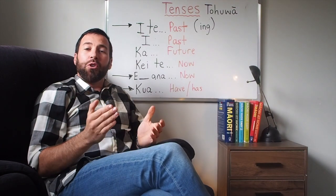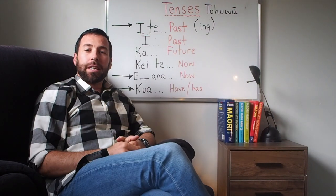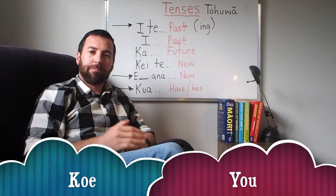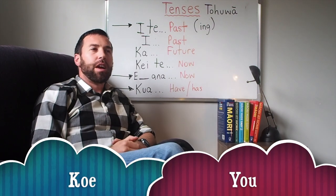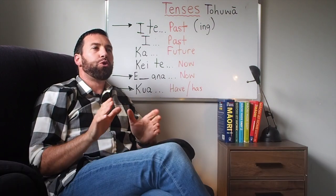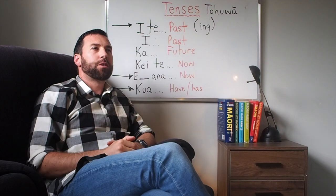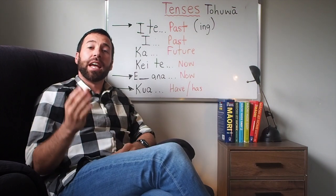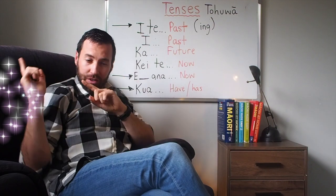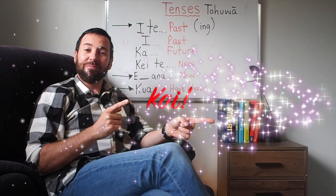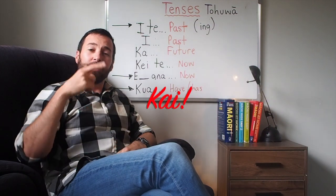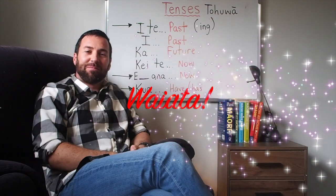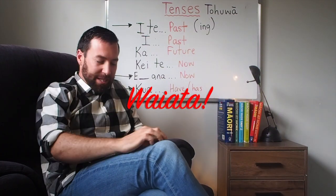Our pronoun for this week is koe. And I'm going to chuck in two new verbs, two new action words. They're going to be eat — kai — and sing — waiata. Kapai, let's get cracking.